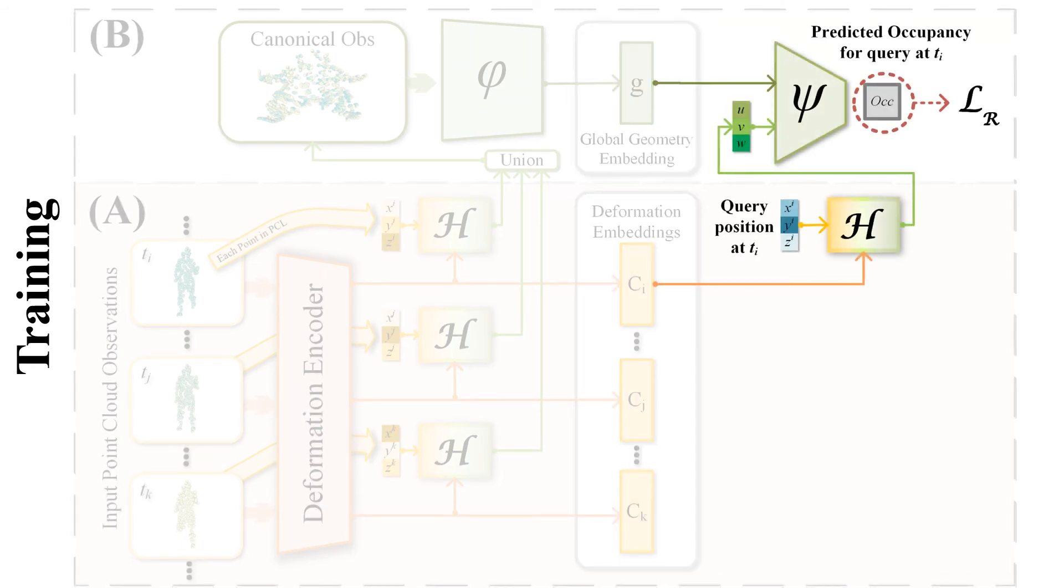To predict the occupancy field value at frame TI, the query position in the deformed frame is first canonicalized to the canonical coordinate via the homeomorphism conditioning on the corresponding deformation embedding of this frame.